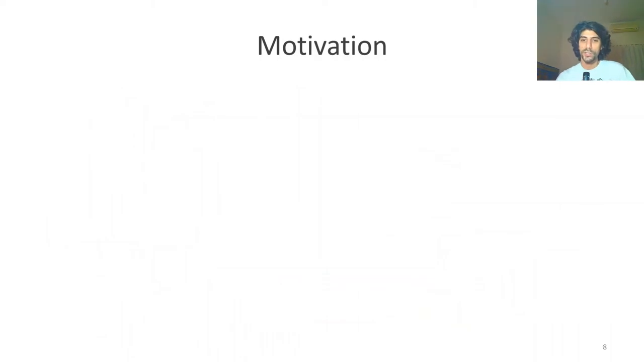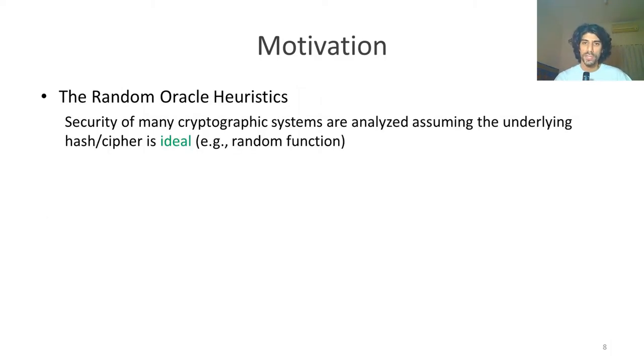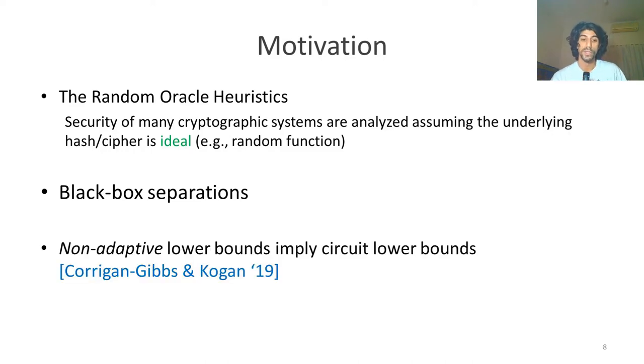This problem is interesting for several reasons. First, many cryptosystems used in practice are analyzed under the assumption that the underlying hash or cipher functions are ideal - they behave like a random function. So any attacks possible for function inversion are also possible for real uses of cryptographic hash functions and ciphers. We also have black box separations which can treat a one-way function as a black box. Finally, non-adaptive lower bounds can imply new boolean circuit lower bounds which are so far out of our reach.